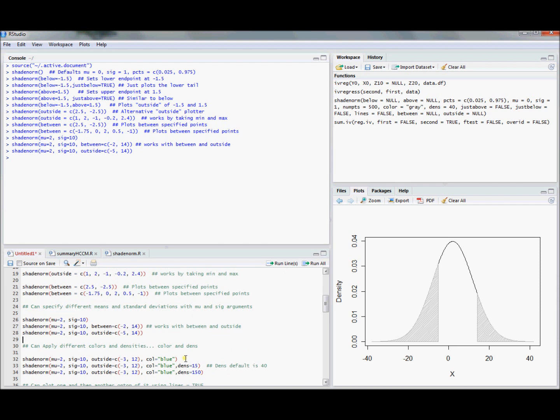You might be interested in specifying different colors. Let's go back to an outside plot where we specify the color blue. We're plotting outside of the interval negative 3 to 12 with a normal distribution with a mean of 2 and a standard deviation of 10, and we can specify it to be blue. You can do red, green, a whole host of different colors.